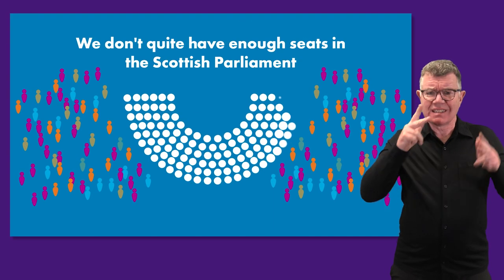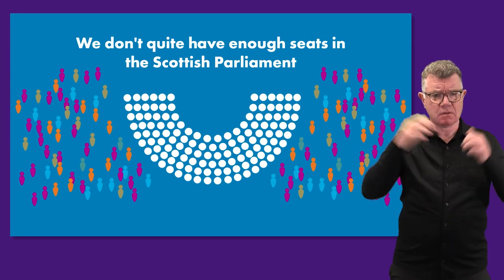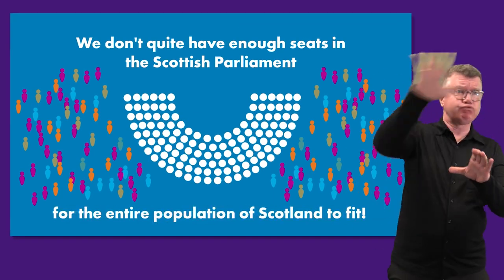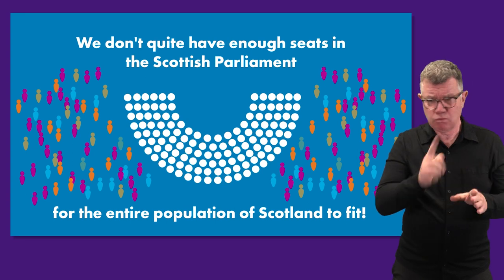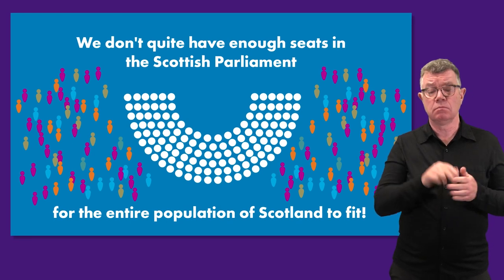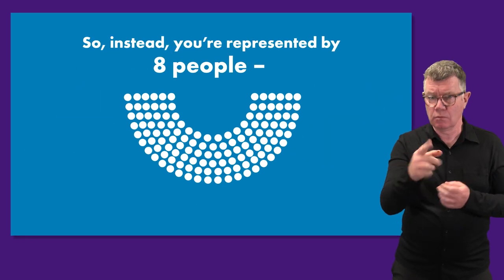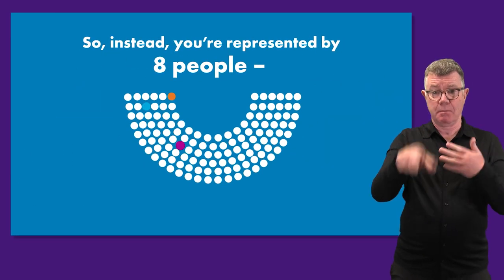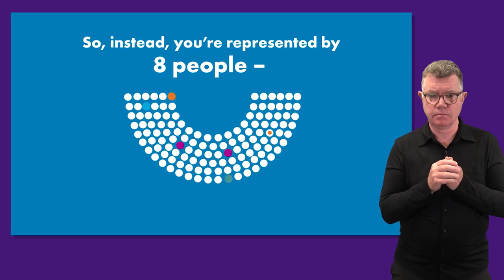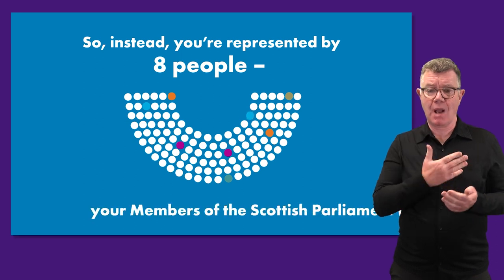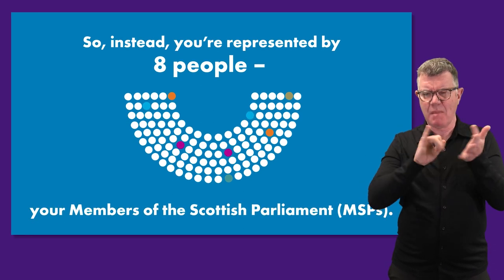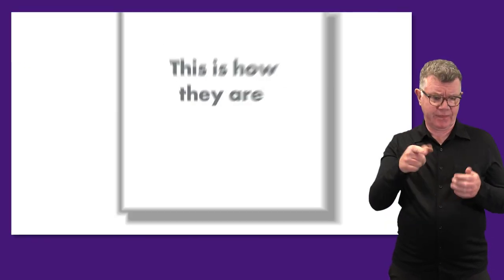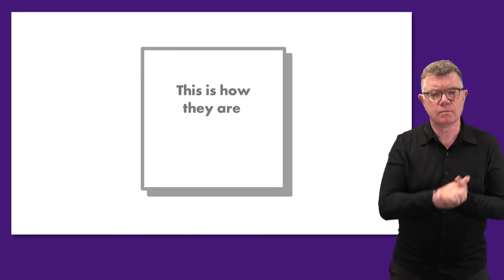We don't have quite enough seats in the Scottish Parliament for the entire population of Scotland to fit. So instead, you're represented by eight people — your members of the Scottish Parliament. This is how they are chosen.